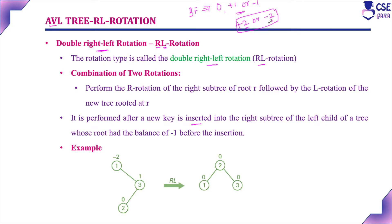To convert an unbalanced binary search tree into a balanced one, we have to perform a rotation. There are four types of rotations: under single rotation — single right rotation and single left rotation; under double rotation — double left right rotation and double right left rotation.